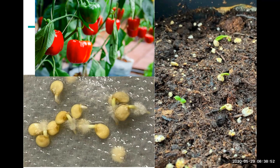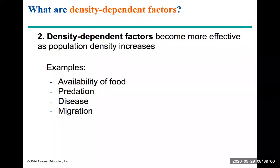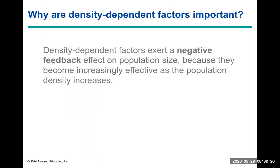Density-dependent factors include food availability, predator abundance, diseases that can devastate an entire population, and migration patterns — including whether migration is accessible or has been blocked by barriers. These factors become more impactful as population density increases.